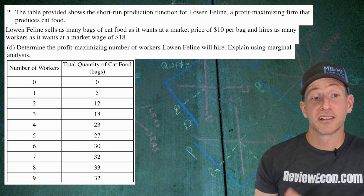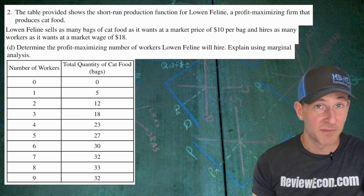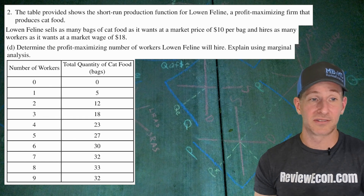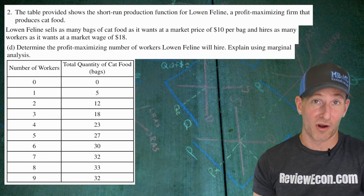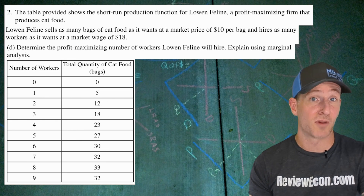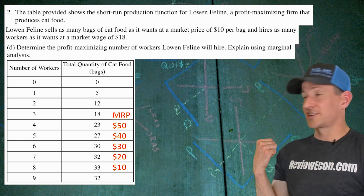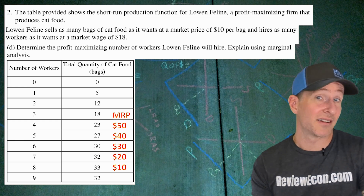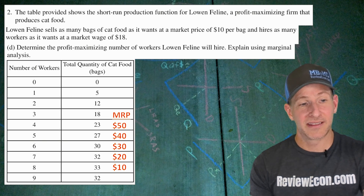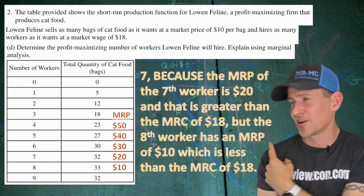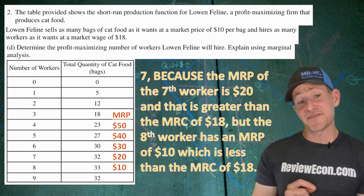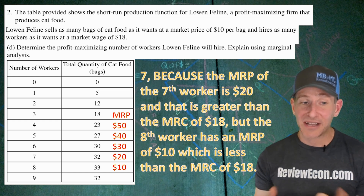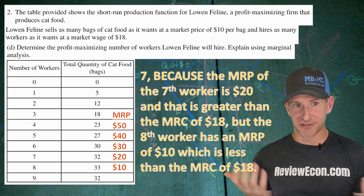Determine the profit-maximizing number of workers Lowen Feline will hire. Explain using marginal analysis. We're looking at marginal revenue product versus marginal resource cost. The marginal revenue product is marginal product times the price of the product, which is $10. The answer is seven workers, because the marginal revenue product of the seventh worker is $20, which is greater than the marginal resource cost of $18. But the eighth worker has a marginal revenue product of $10, which is less than the marginal resource cost of $18, so they would actually lose $8 by hiring that worker.